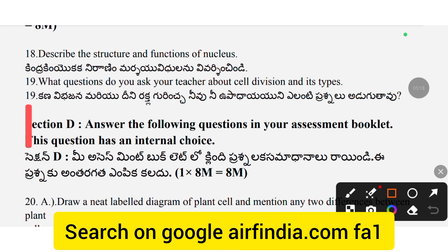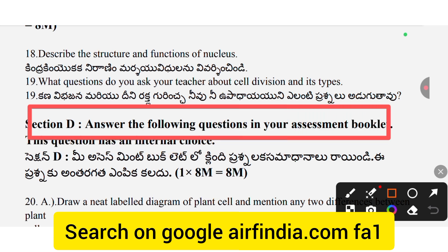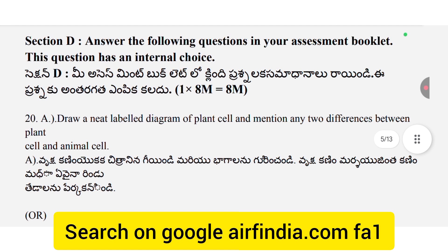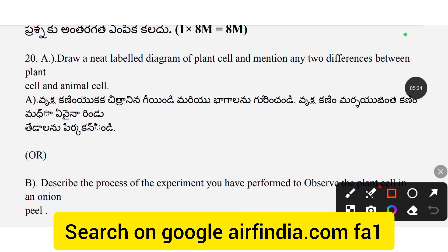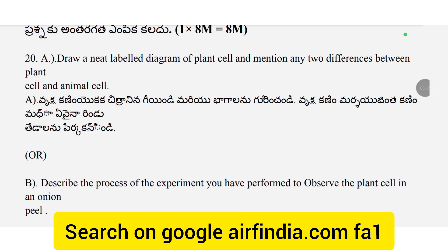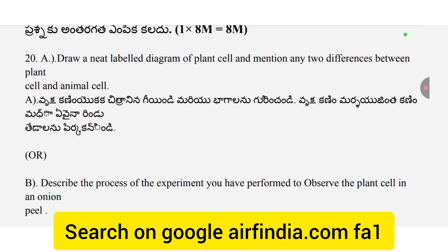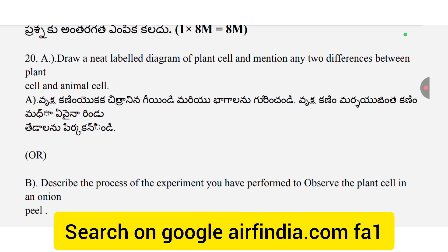Section D: Answer the following questions. The following question has an internal choice. Choose between option A or option B. Draw a neat labeled diagram or describe the process you observed of a plant saline onion peel.